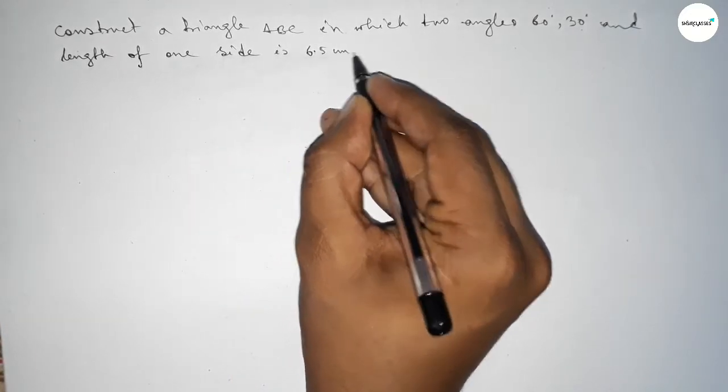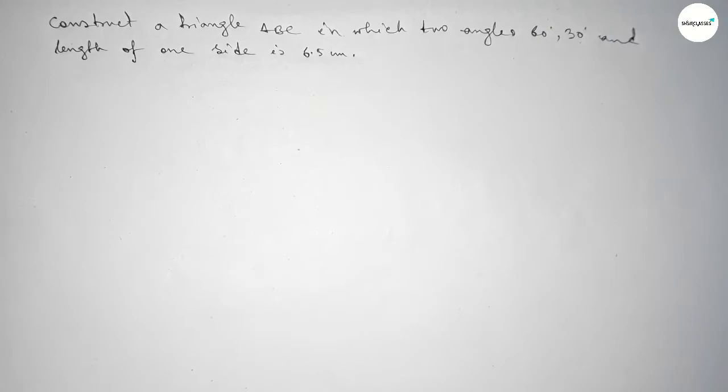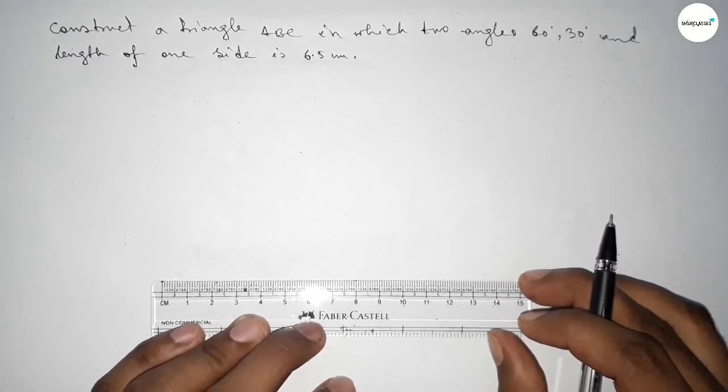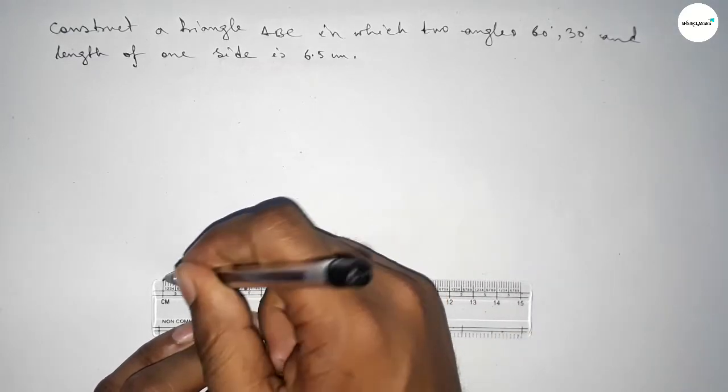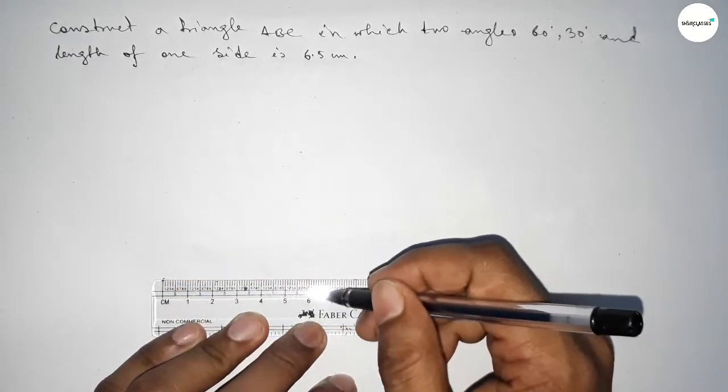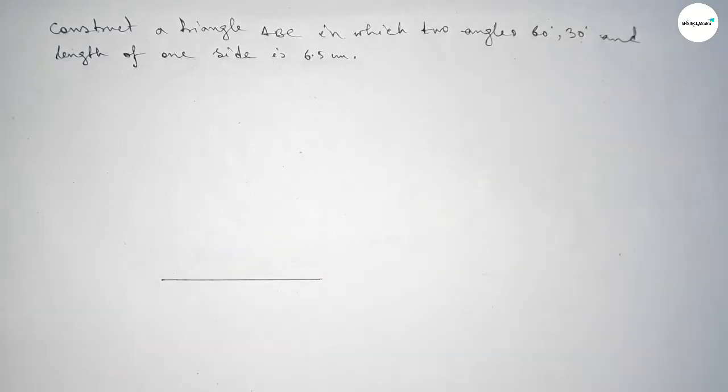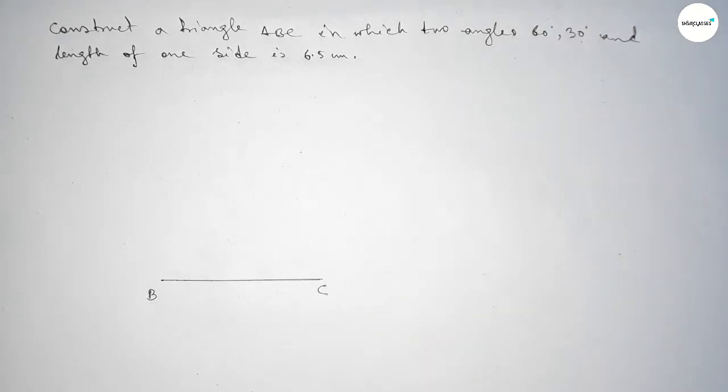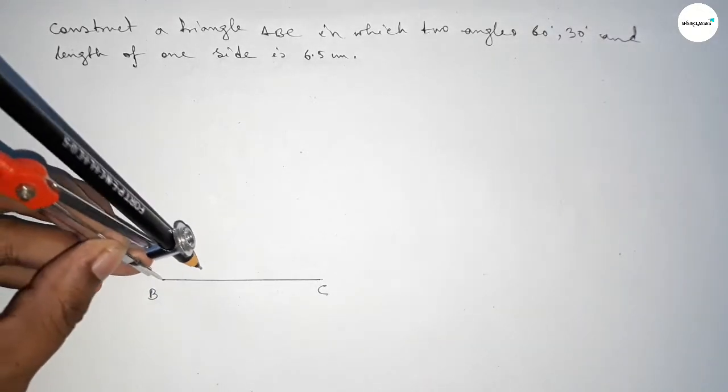Let's start the video. First of all, we have to draw here a line of length 6.5 centimeters. This is the 6.5 centimeter line, taking here point B and here C. Now drawing a 60 degree angle on point B.